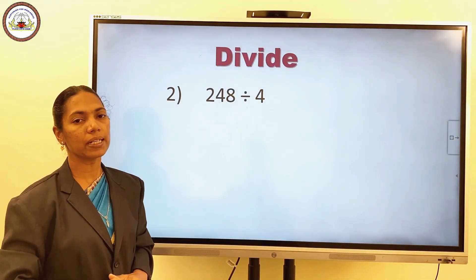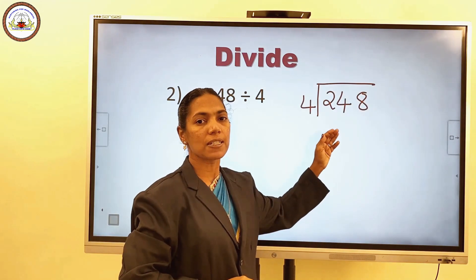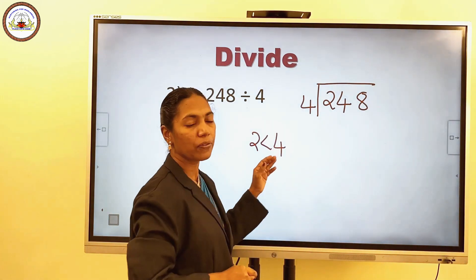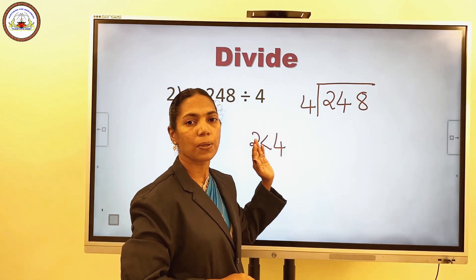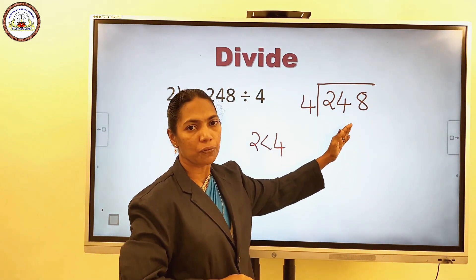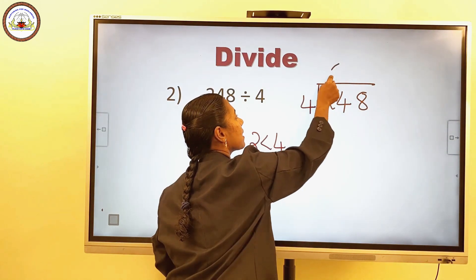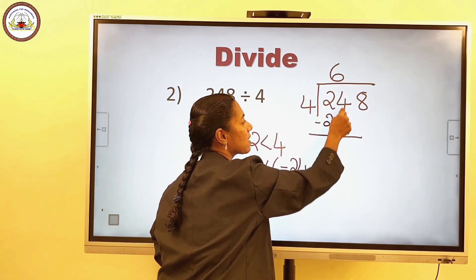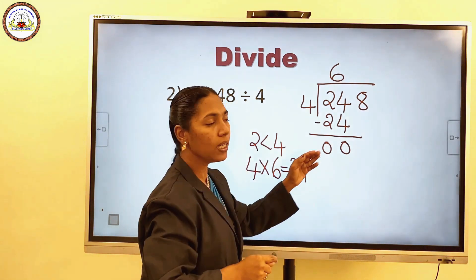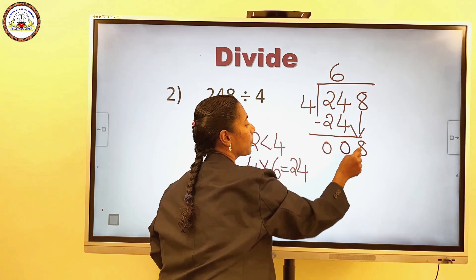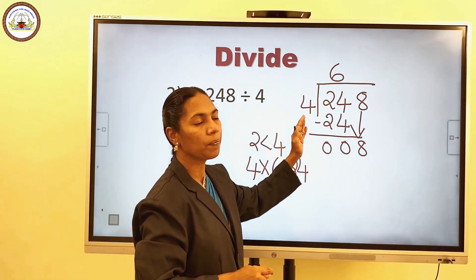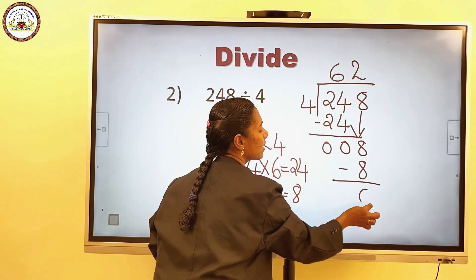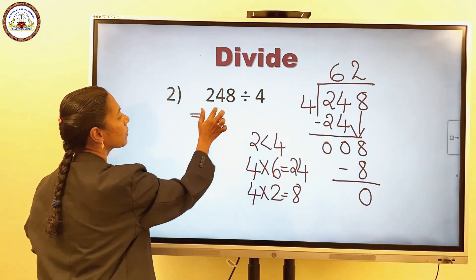Another question: divide 248 by 4. Take the first digit, 2. But 2 is less than 4, so we cannot divide 2 by 4. So take the first two digits, 24. How many times is 4 in 24? Write 6 in the quotient. 4 into 6 is 24, write below this 24, subtract: 0. Bring down the next digit, 8. How many times is 4 in 8? 2 times. Write 2 here. 8 minus 8 is 0. The answer is 62.